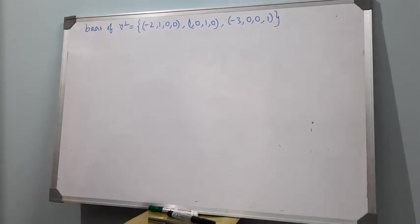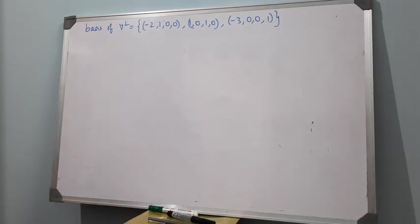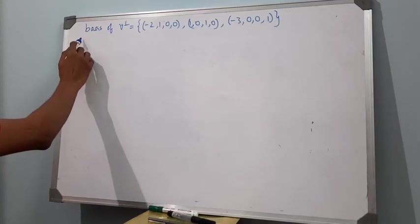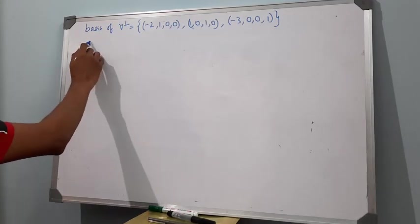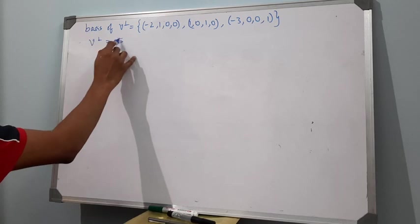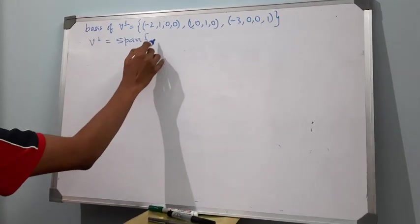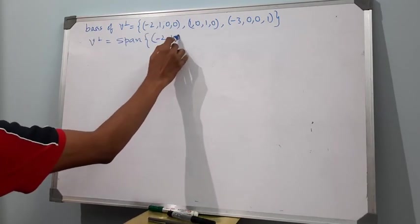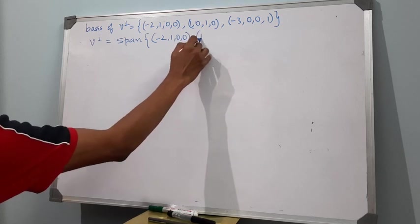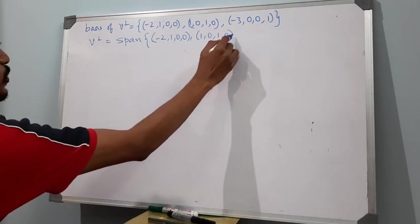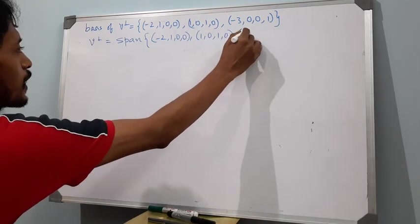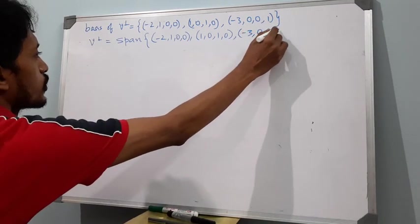So we write the basis of v perp to be {(-2, 1, 0, 0), (1, 0, 1, 0), (-3, 0, 0, 1)}. Therefore, v perp is equal to the span of (-2, 1, 0, 0), (1, 0, 1, 0), and (-3, 0, 0, 1).